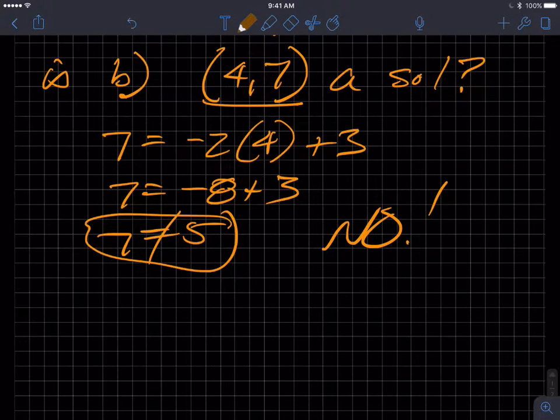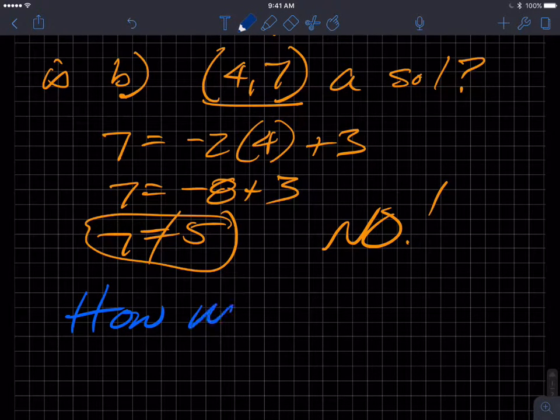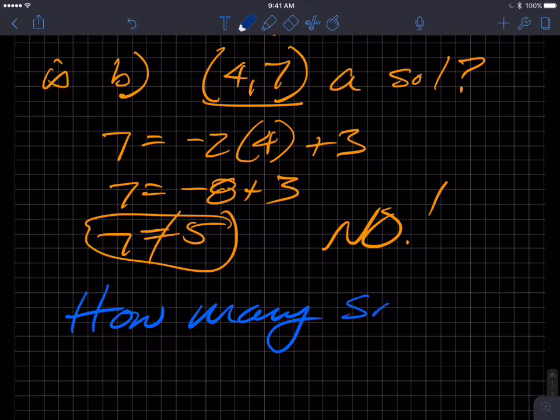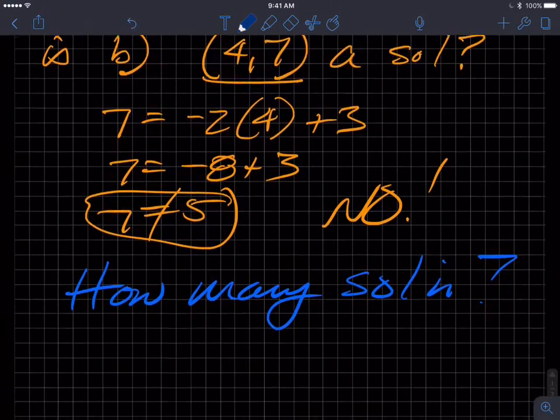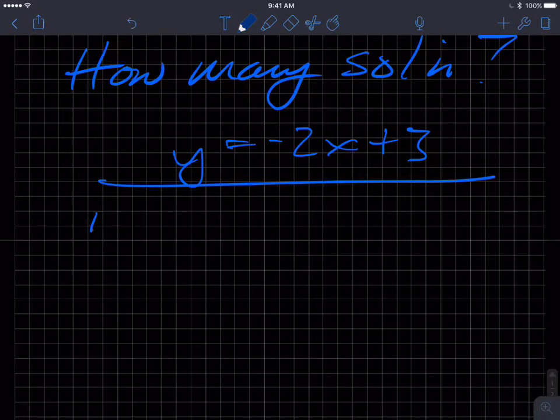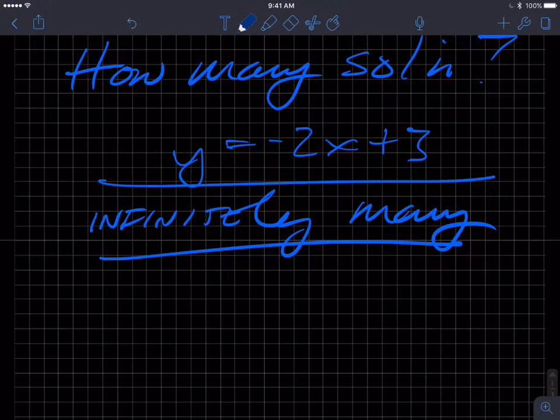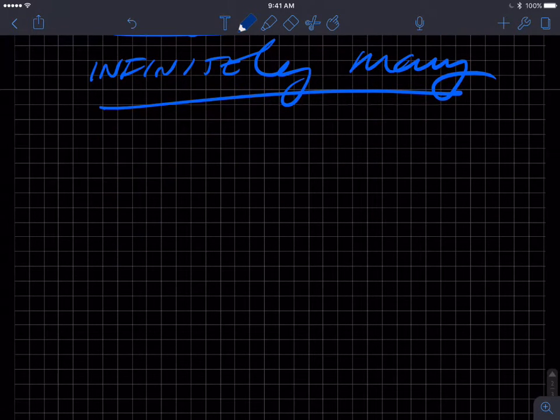And no, that is not true. So no, 4 comma 7 is not a solution to that equation. So I'll ask the question again: how many solutions are there? How many solutions are there for that equation, y equals negative 2x plus 3? Now, hopefully you said infinitely many.